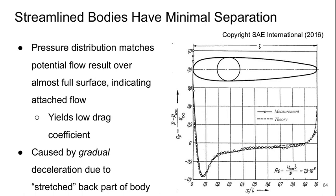Now a streamlined body is one that has minimal separation. And so the pressure distribution is going to match the potential flow result over almost the whole surface. So this tells us the flow is well attached. That's going to yield a low drag coefficient. We can see that here.